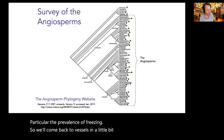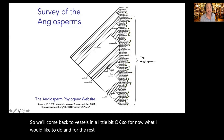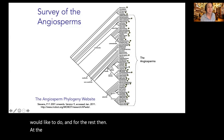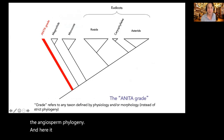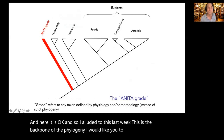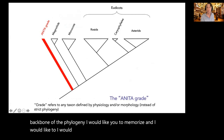Vessels appear to have been gained and lost multiple times depending on the local environment, particularly the prevalence of freezing. For the rest of class today, I'll give you this overview — the backbone of the angiosperm phylogeny. I would like you to memorize these six groups: the ANITA grade, the magnoliids, the monocots, the rosids, the caryophyllales, and the asterids.